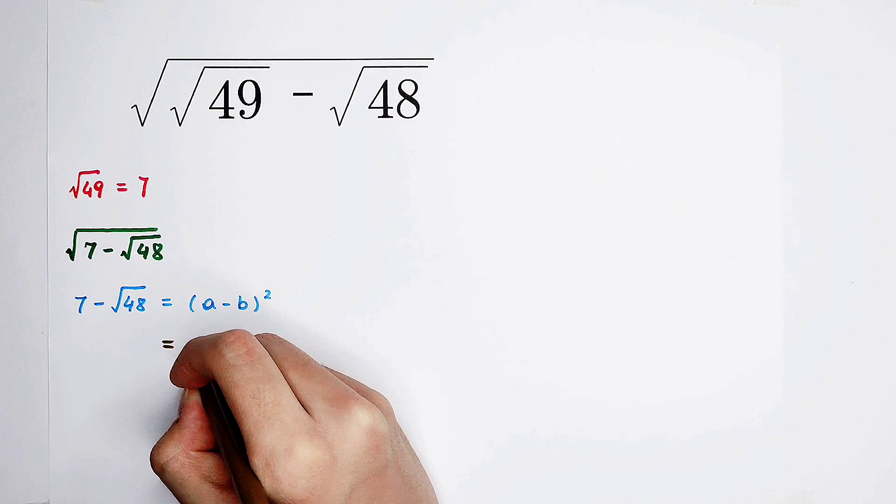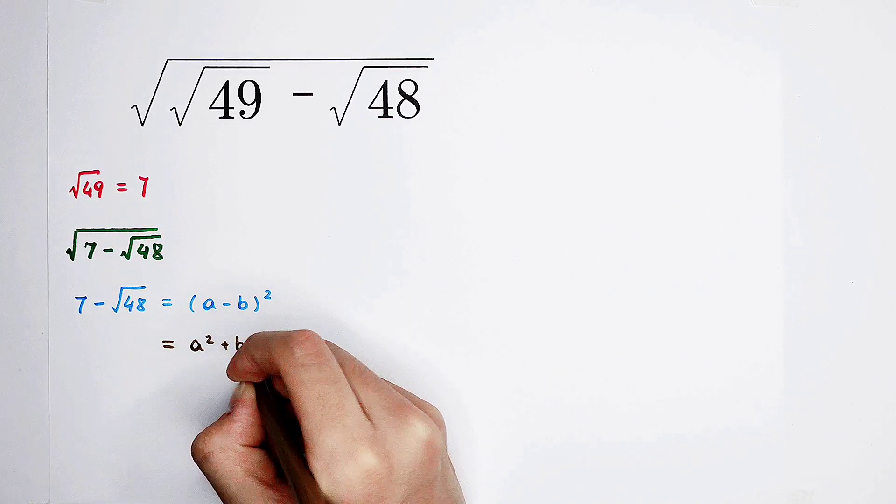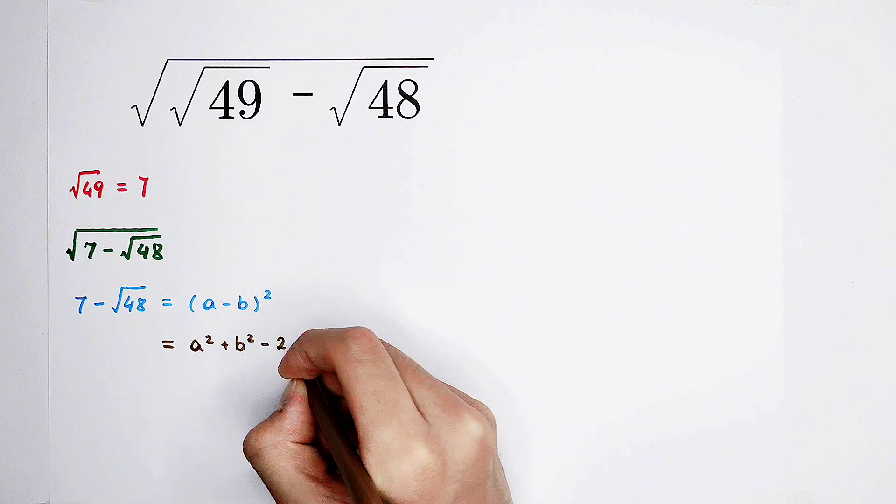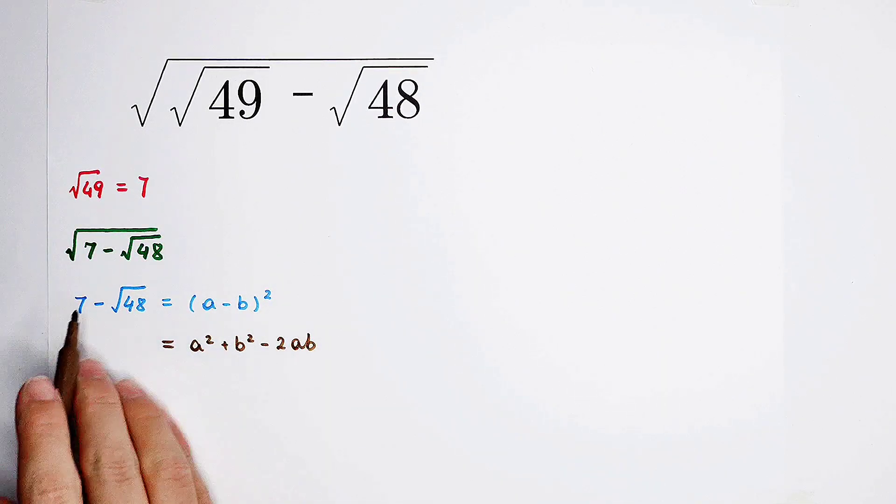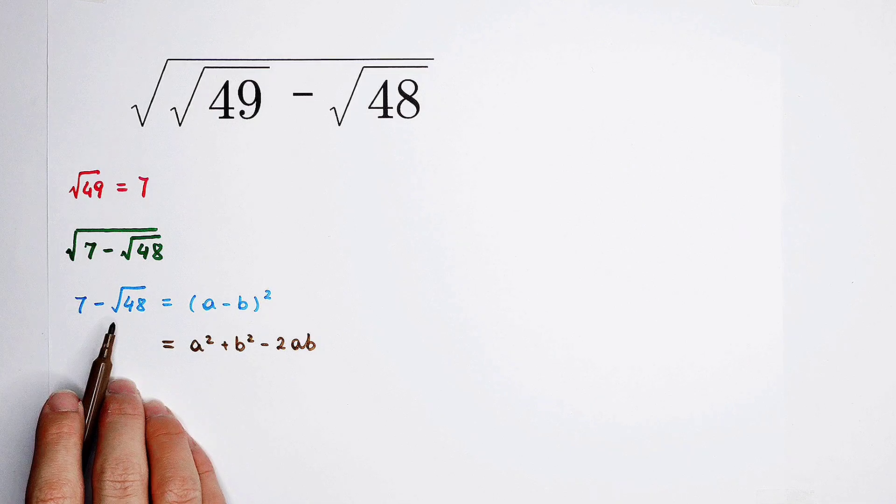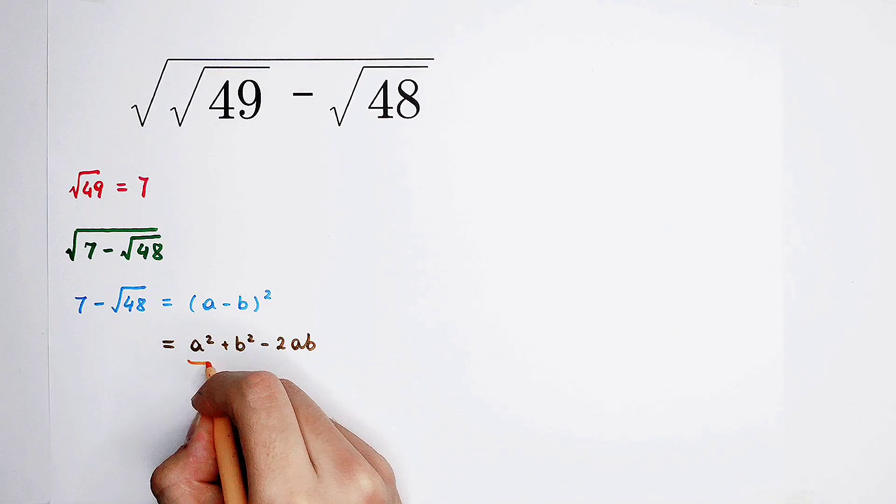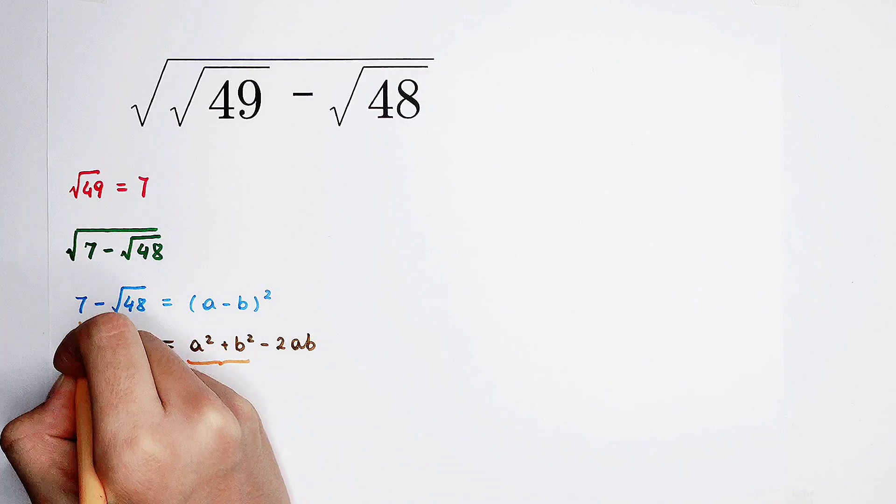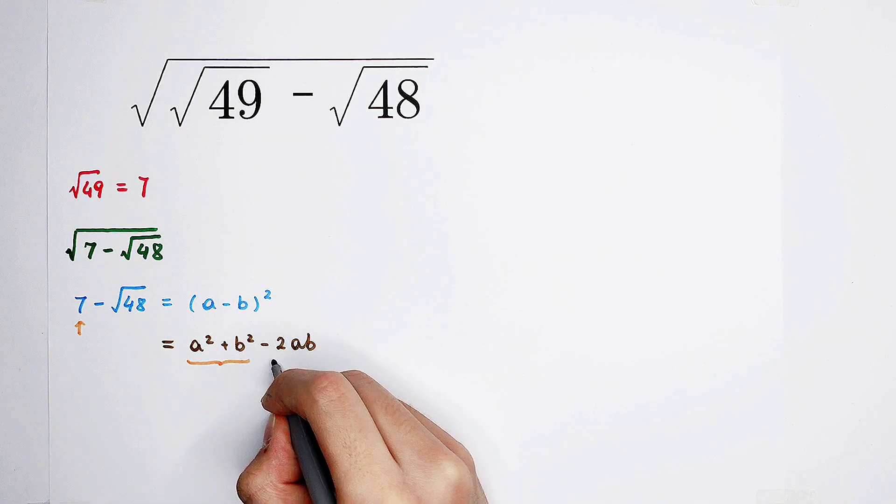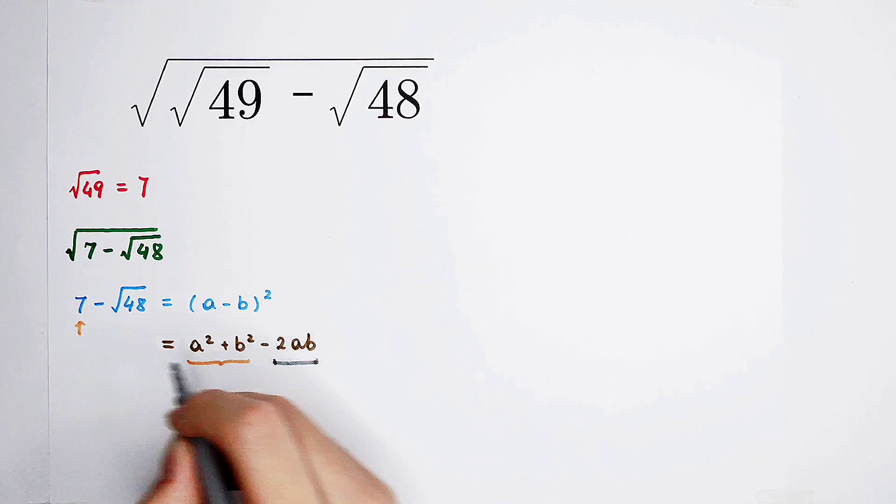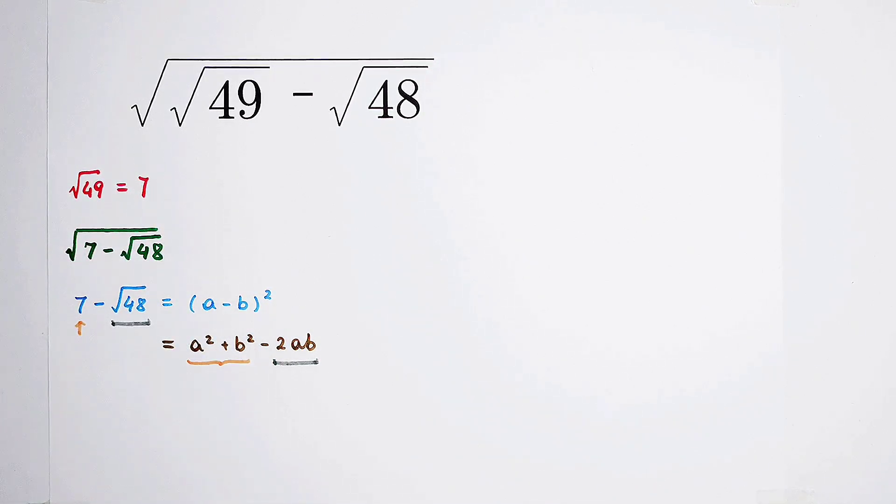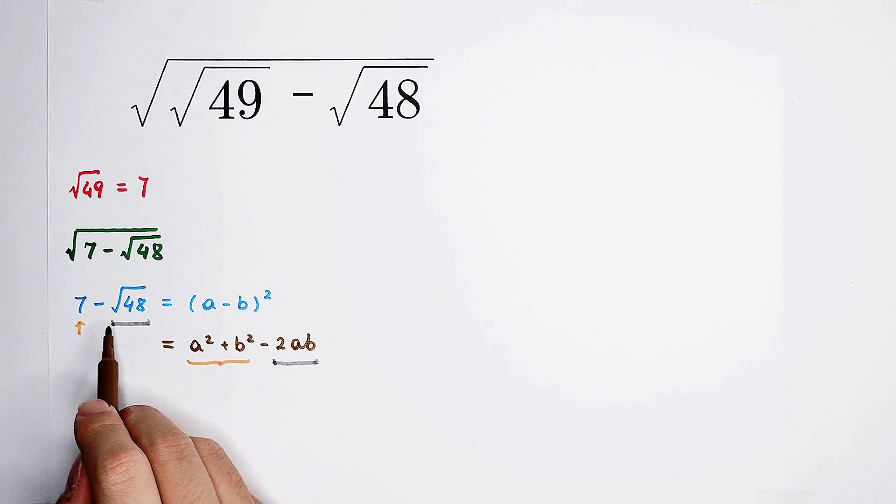After the expansion, it's going to be a² plus b² minus 2ab. So now, we hope that 7 minus √48 can be written as a² plus b² minus 2ab. Then you can see, in this way, a² plus b² should be equal to 7. And 2 times ab should be equal to √48. But in this way, I hope there will appear a 2 in front of the √48.